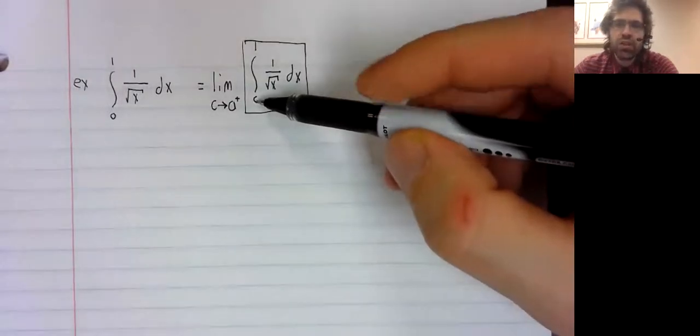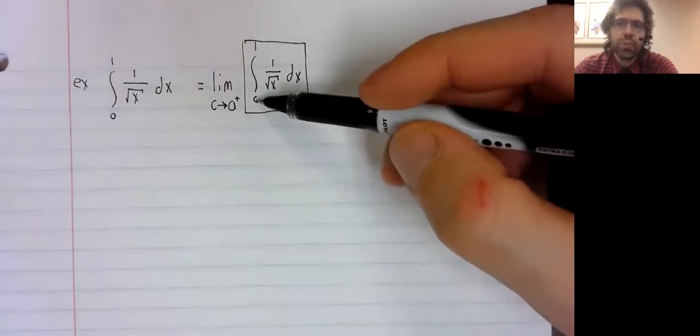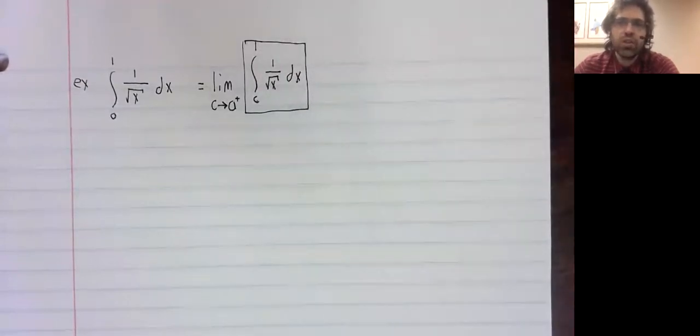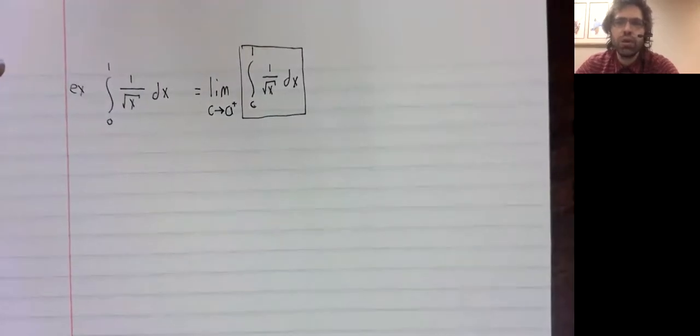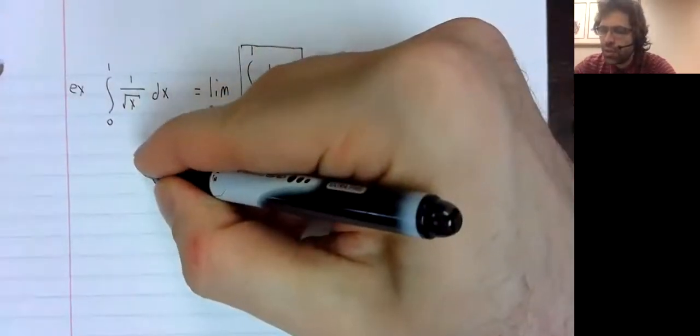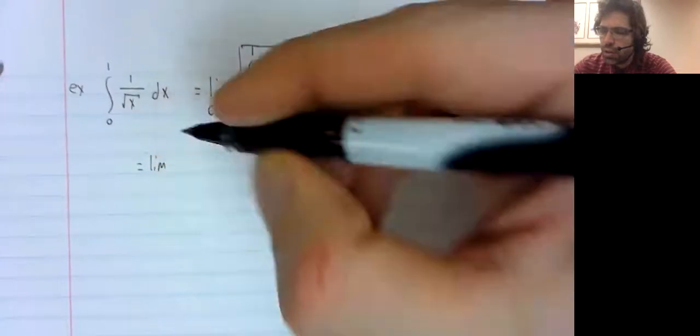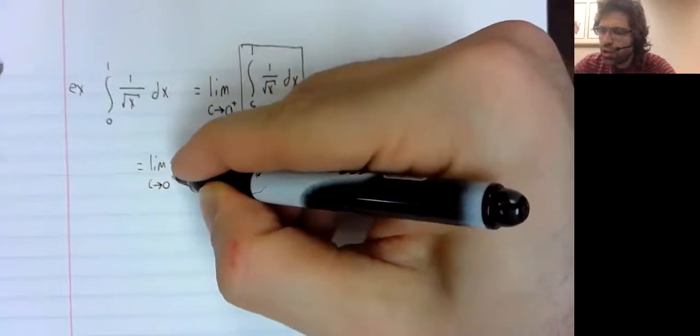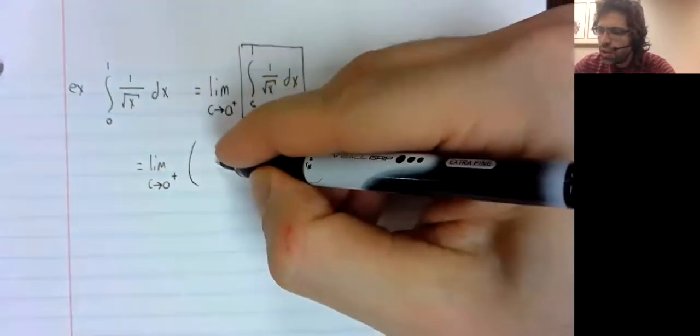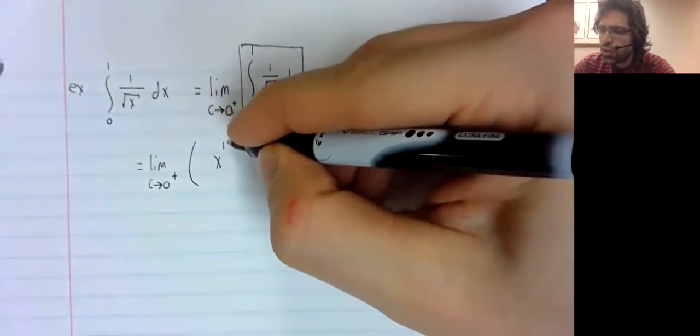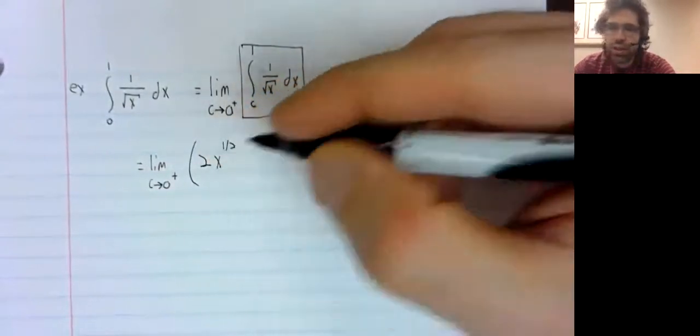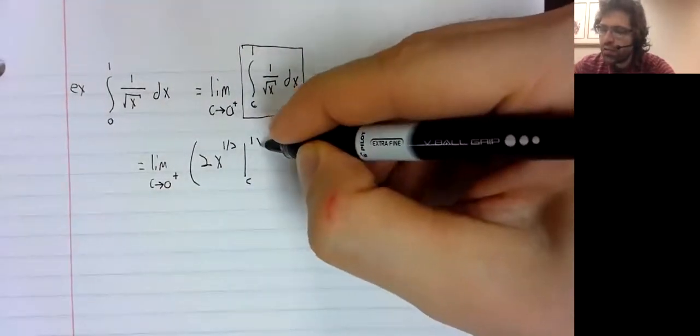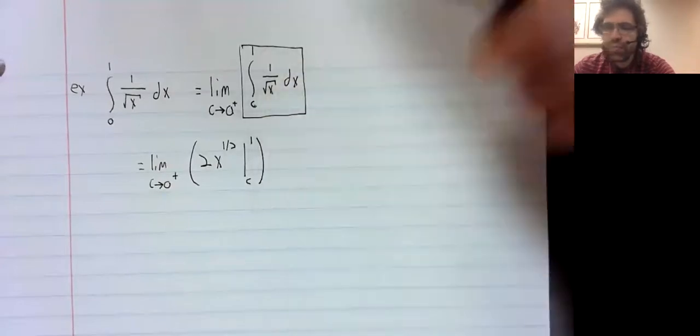If C is greater than zero, then between C and one, this function is continuous and the fundamental theorem applies. We'll compute the antiderivative, I hope without too much trouble at this point in our careers. And we are going from C to one.